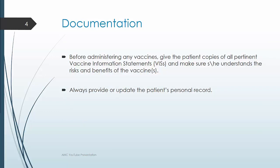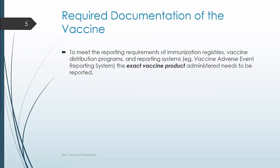Before administering any vaccines, give the patient copies of all pertinent vaccine information statements, or VISs, and make sure that the patient understands the risks and benefits of receiving that vaccine. Always provide or update the patient's medical record. To meet the reporting requirements of immunization registries, vaccine distribution programs, and reporting systems such as the Vaccine Adverse Event Reporting System, the exact vaccine product administered needs to be reported.